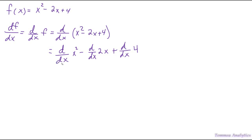Now to operate first on x², we're going to use the power rule. To do that we just take the exponent, drop it down next to the x, and then subtract 1 off the exponent. So we effectively get 2x to the 1st.